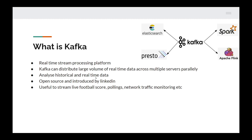Kafka is a real-time stream processing platform that is used to distribute huge volumes of real-time data across multiple servers parallelly. The right side graphic shows four external data sources beside Kafka: Elasticsearch, RustroDB, Apache Spark, and Apache Flink. Kafka can receive data from a data source and distribute it via a consumer to these external sources parallelly.